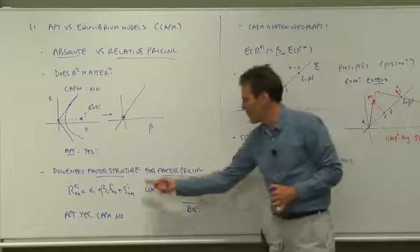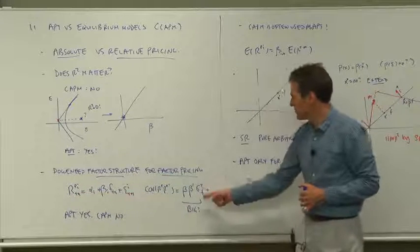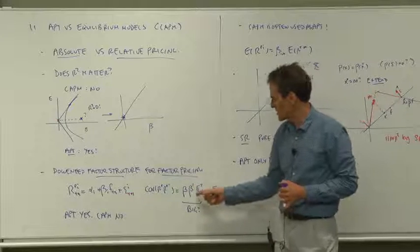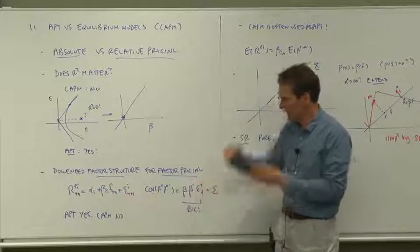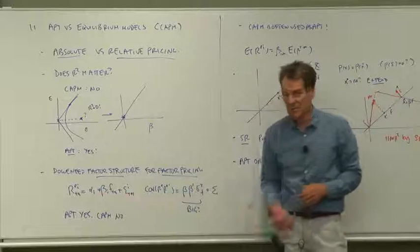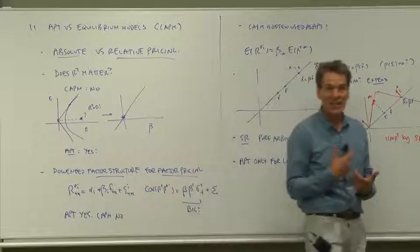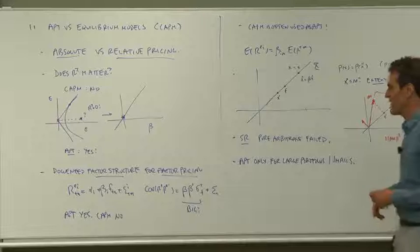When I derive the covariance matrix of returns, the first component of that covariance matrix is the vector of betas, beta beta prime, times the variance of the factor. That's factor structure in the covariance matrix.